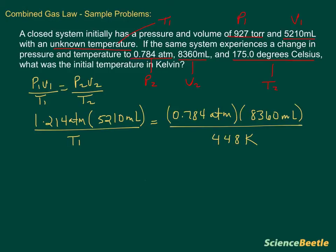If we simplify this a little bit, we'll take the 1.214 times the 5210. That will give us the following number. It will give us 6 point... let me see, make sure I got this right, 1.214 times 5210, and we're going to get 6,324.94. Our units are going to be atmosphere milliliters divided by T1.